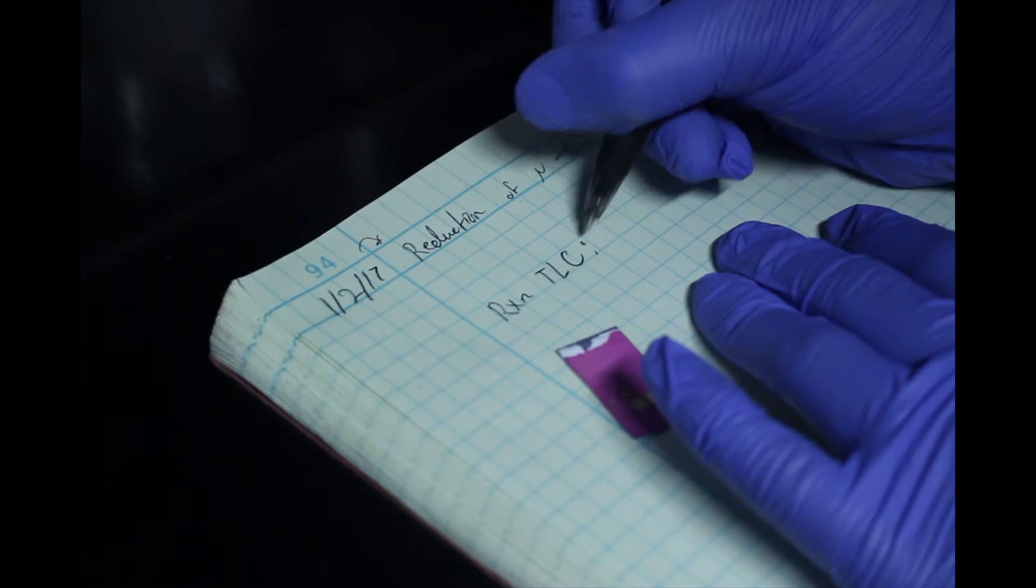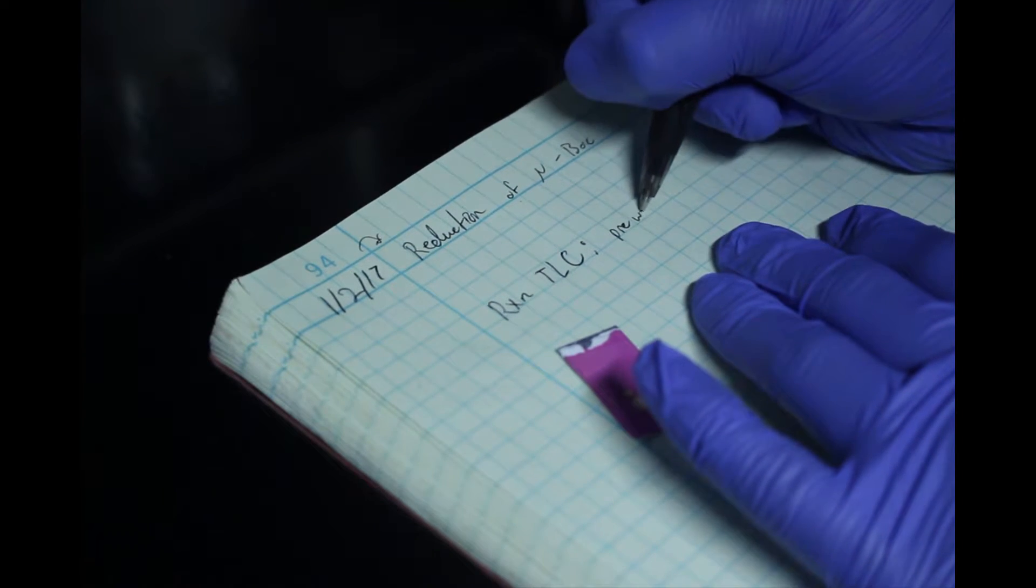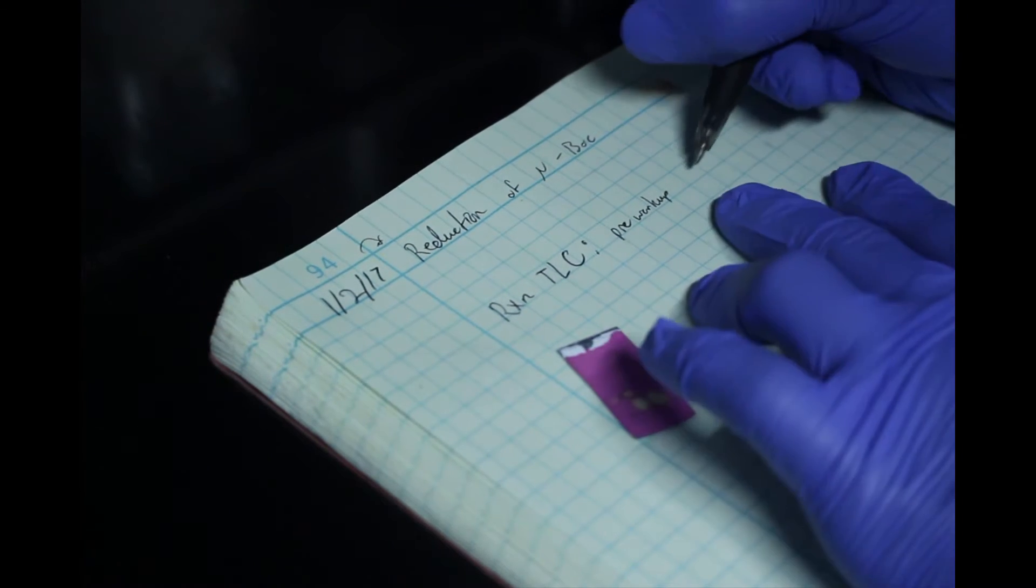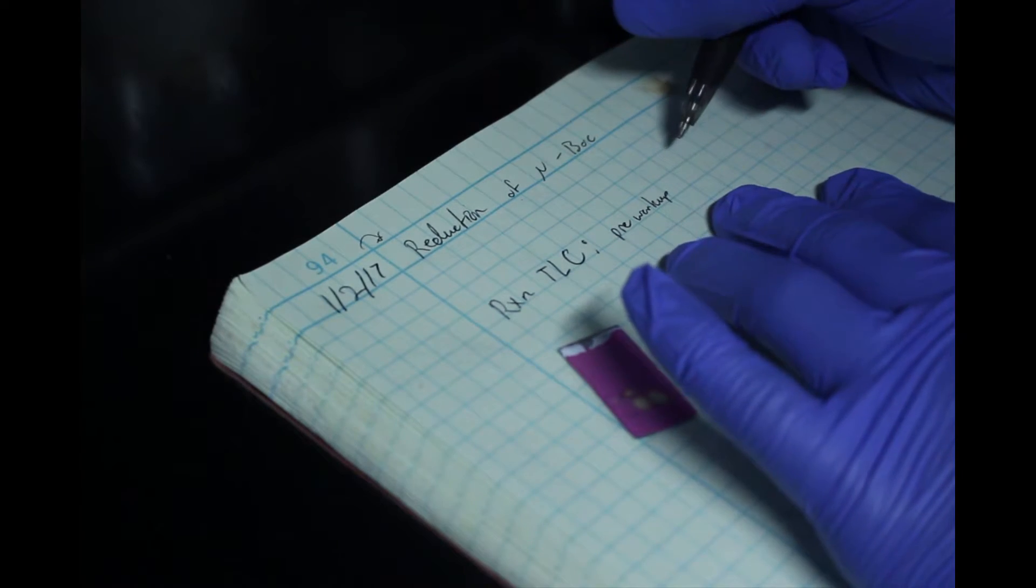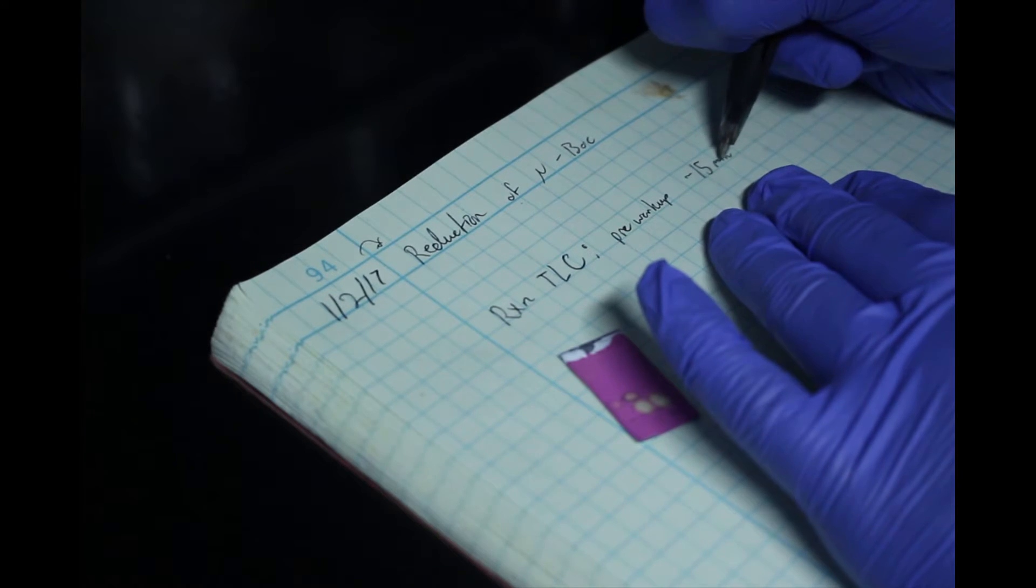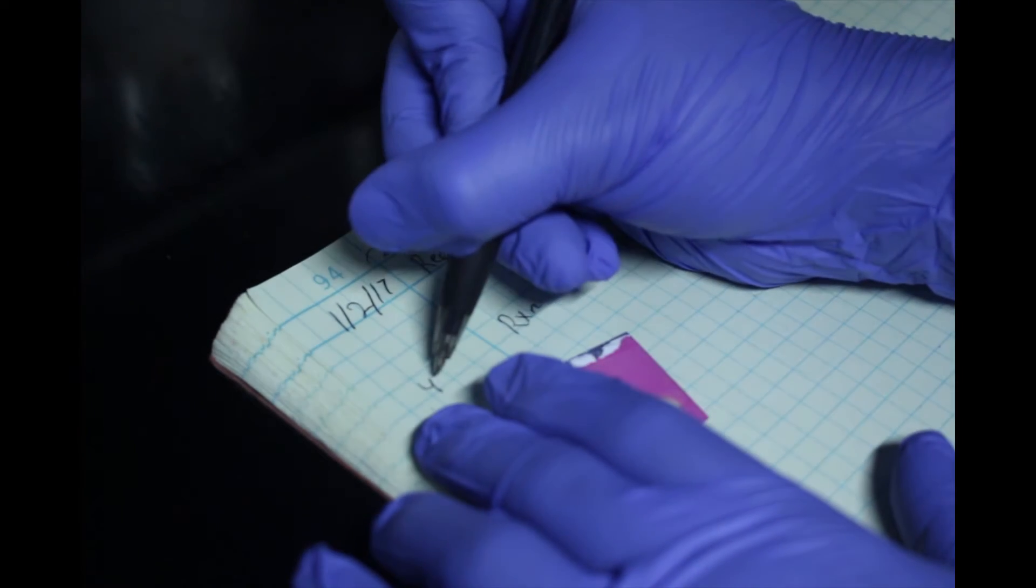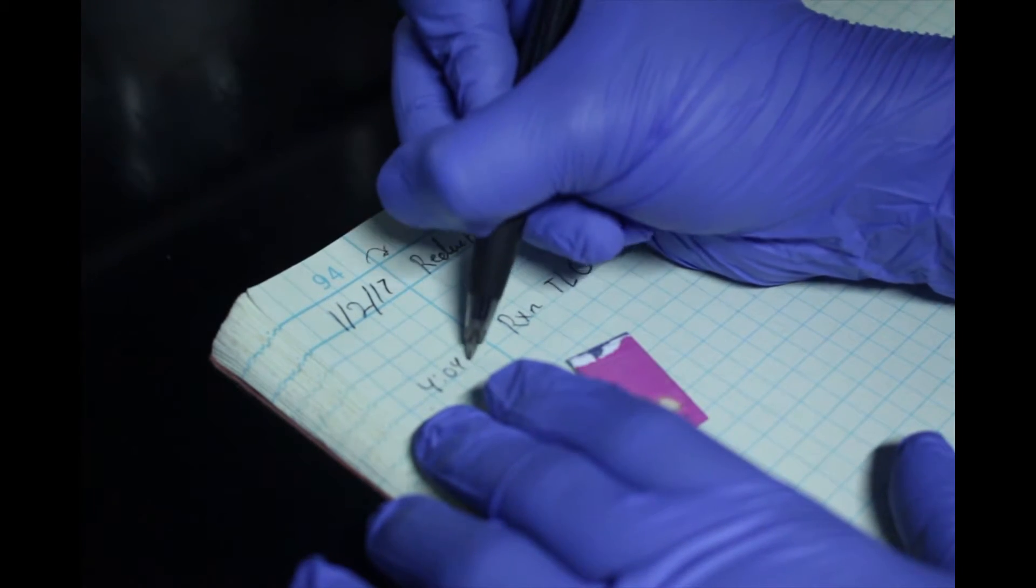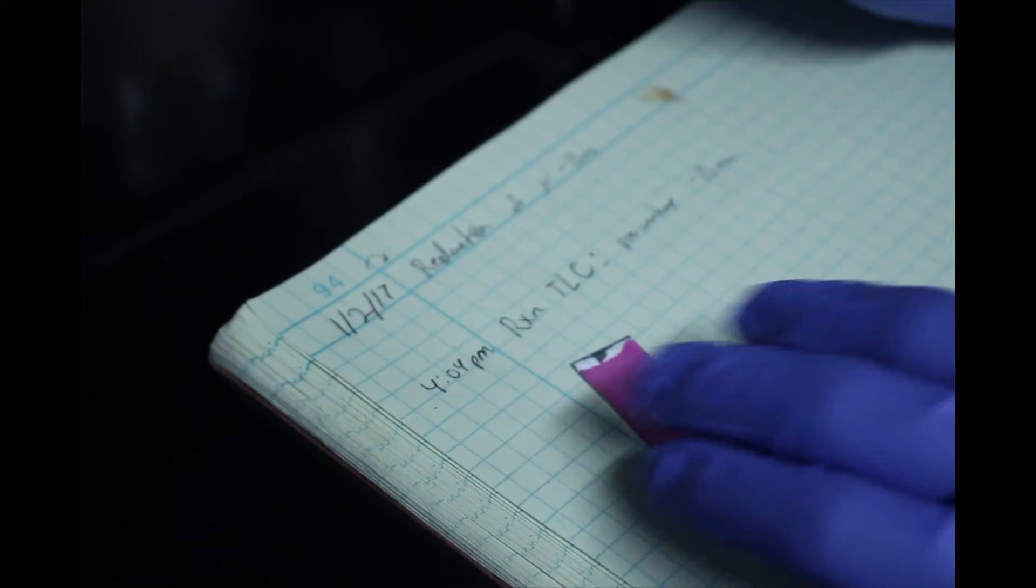Record the TLC plate in your notebook and interpret the results. If the spots are near the bottom of the TLC plate, the selected solvent system is too nonpolar. If the spots are all crowded at the top of the TLC plate, the solvent system is too polar. The goal is to achieve an ideal separation between the compound spots on the plate.